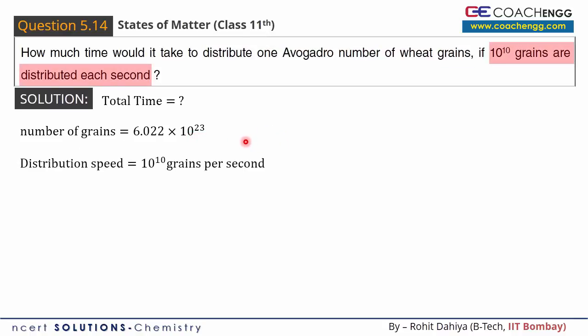If 10^10 grains are distributed each second, then the grain distribution speed is given as 10^10 grains per second.